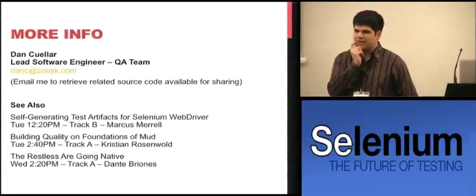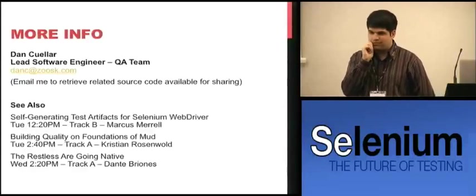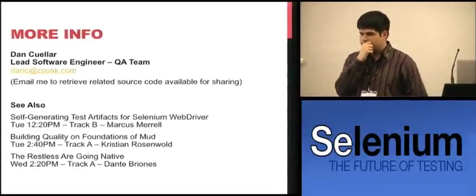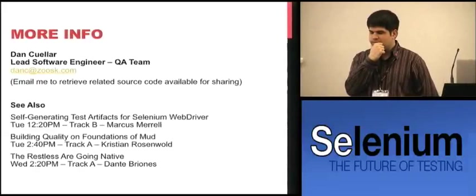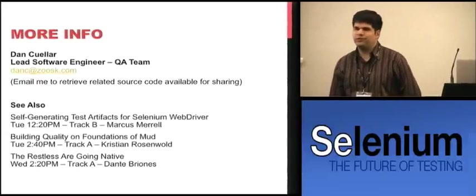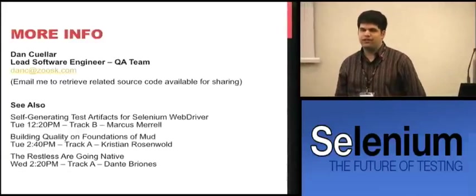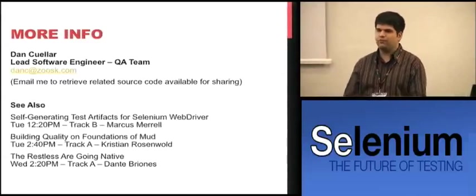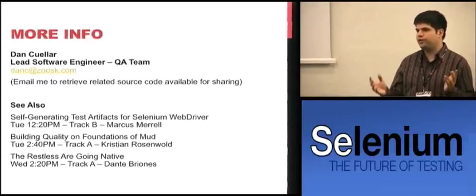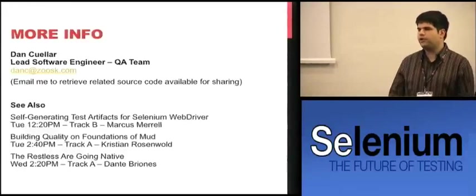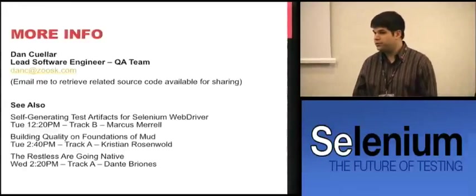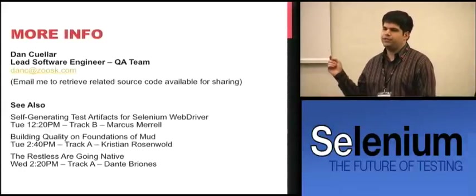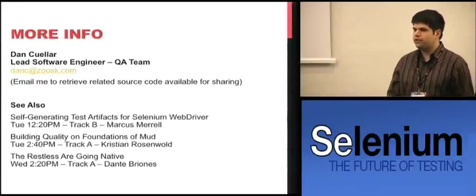Q: How do you define your test suite? A: We have a program called TestRail, which organizes tests and lets you group them into suites. We have a suite that's basic acceptance — did I break something across the site — and an edit profile suite — did I break profile? Depending on how much time we have, we choose which ones to run. In the test harness, I've written code that queries the TestRail database and asks which tests are in this suite, then queues them up and runs them.